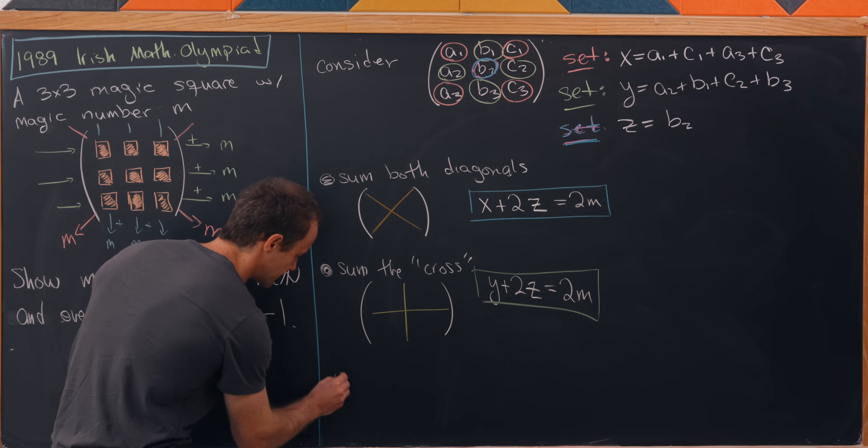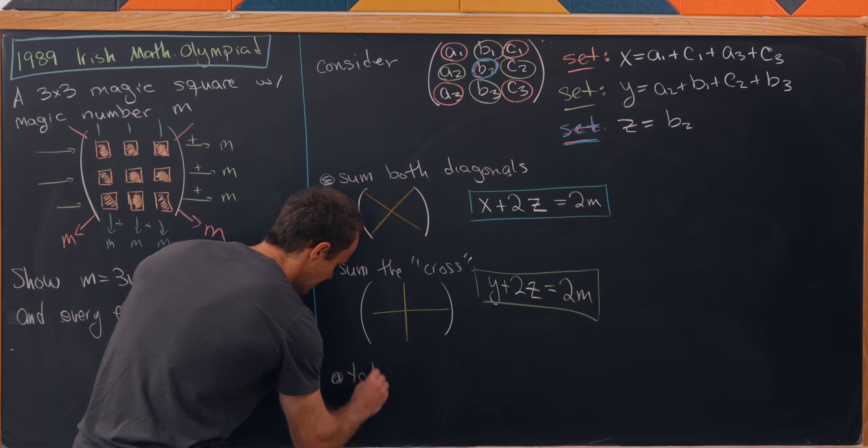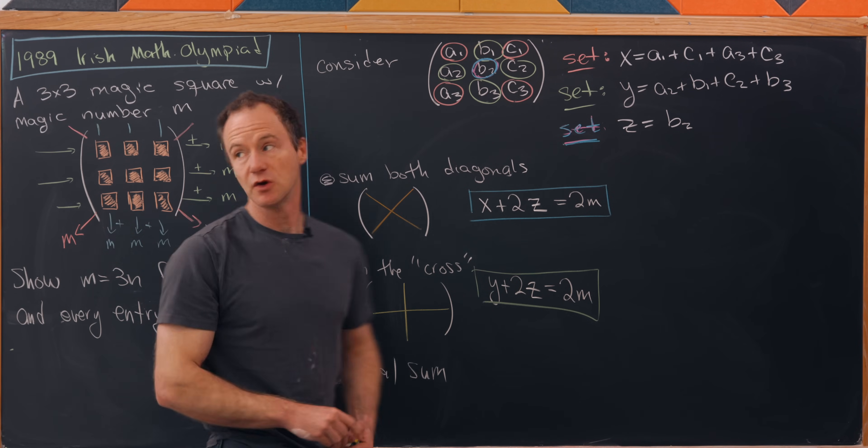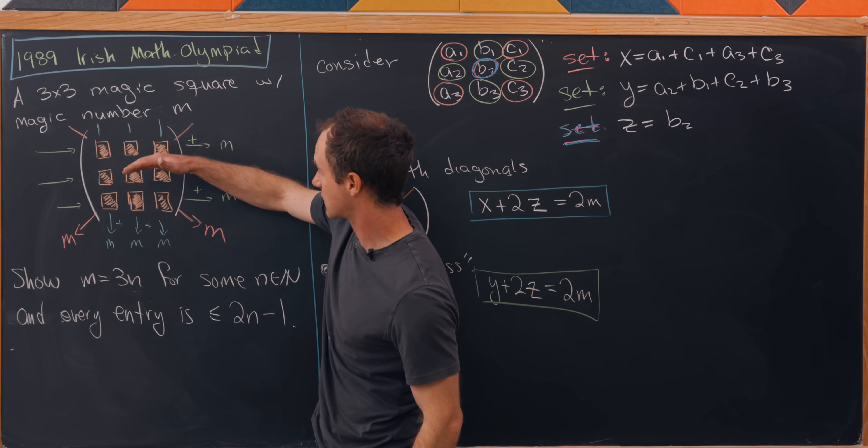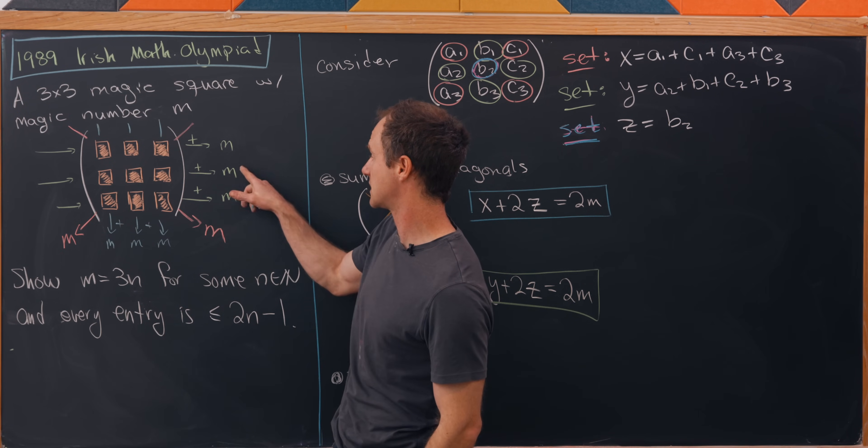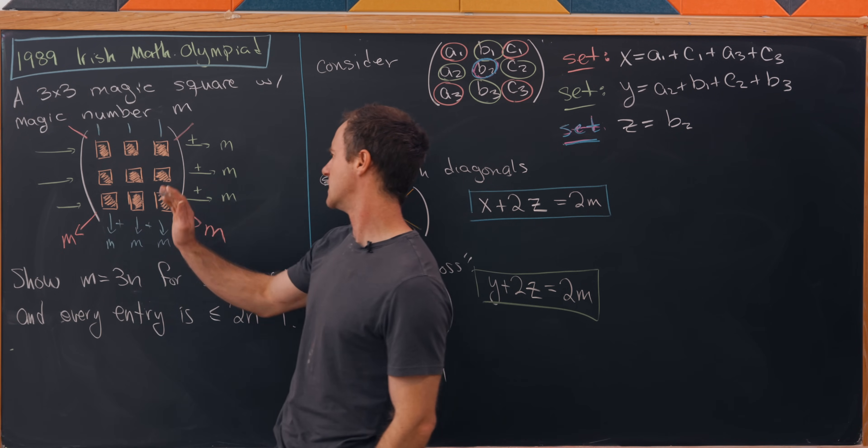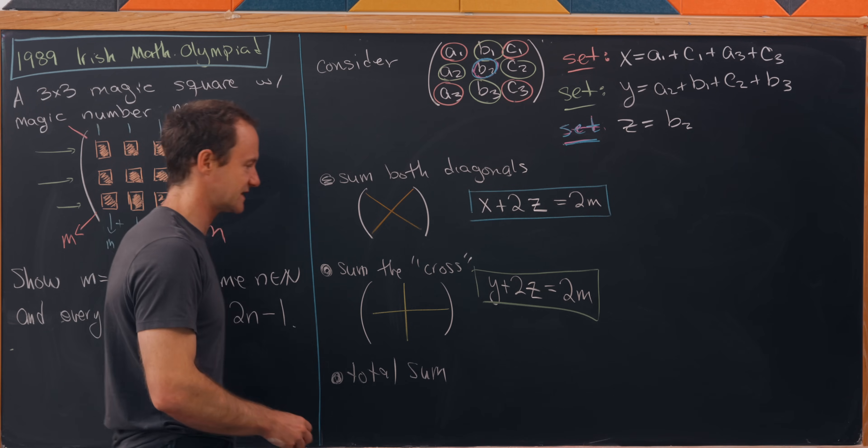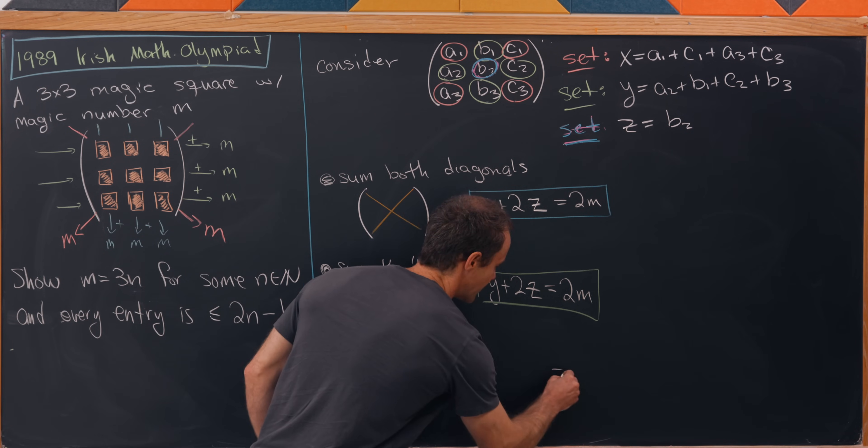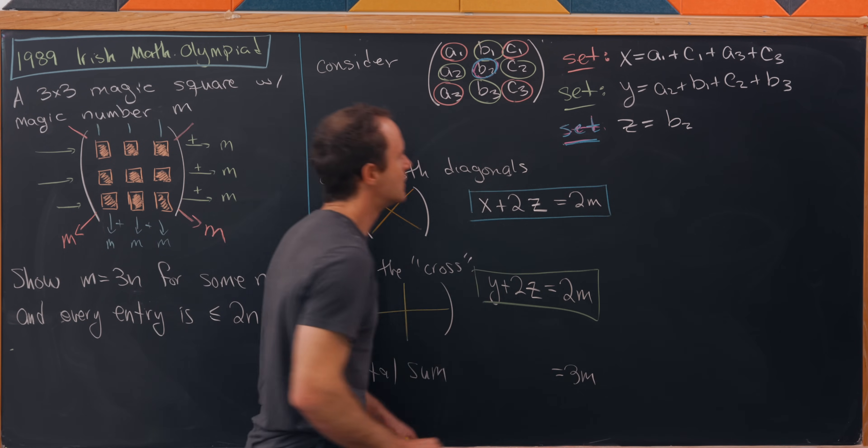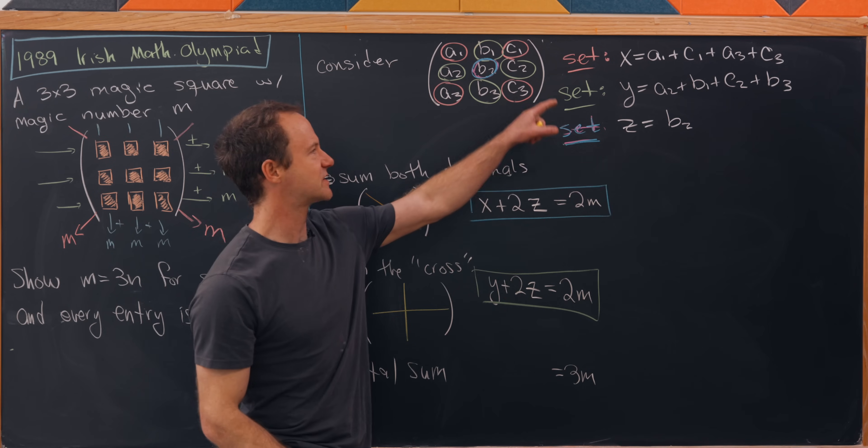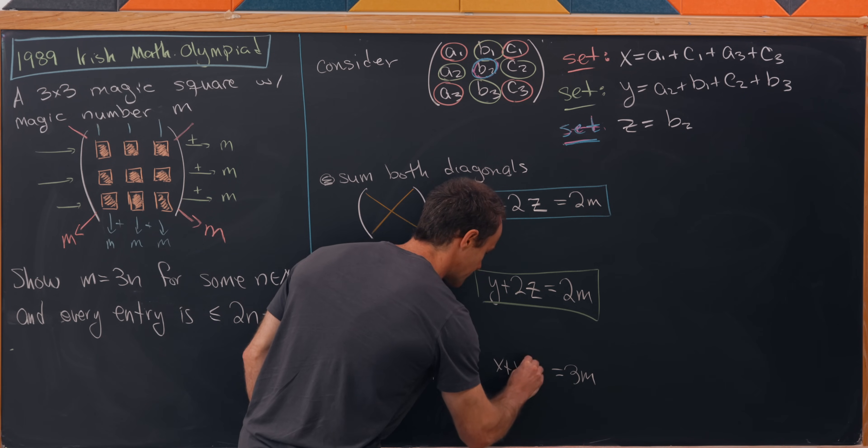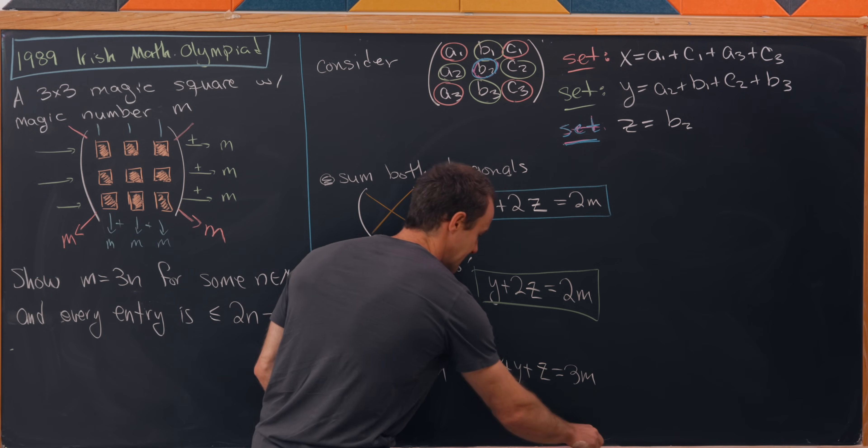Next, we're going to take our total sum. We could do the first row, the second row, the third row, that would be m plus m plus m. We could do it the first column, the second column, the third column, that would be another m plus m plus m. Any way you do it, you get to 3m. But notice by our partitioning of all of those entries, that's also exactly x plus y plus z.